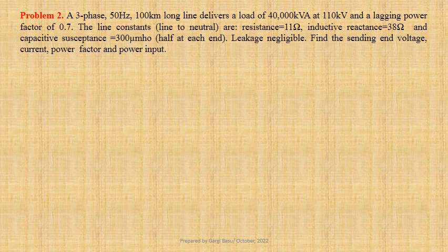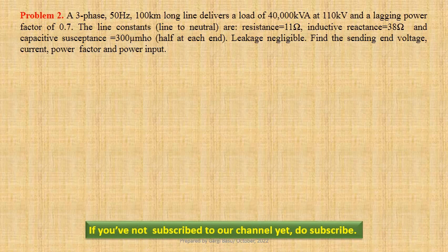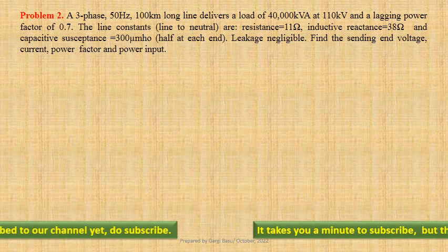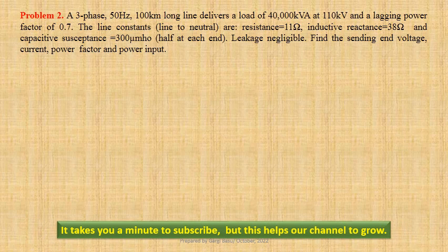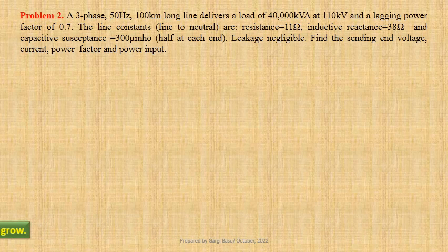A three-phase 50 hertz, 100 kilometer long line delivers a load of 40,000 kilovolt ampere at 110 kilovolts and a lagging power factor of 0.7. Line to neutral line constants are: resistance equals 11 ohm, inductive reactance equals 38 ohm, and capacitive susceptance equals 300 micro mho. Neglecting leakage, we have to determine the sending end voltage, current, power factor and power input.